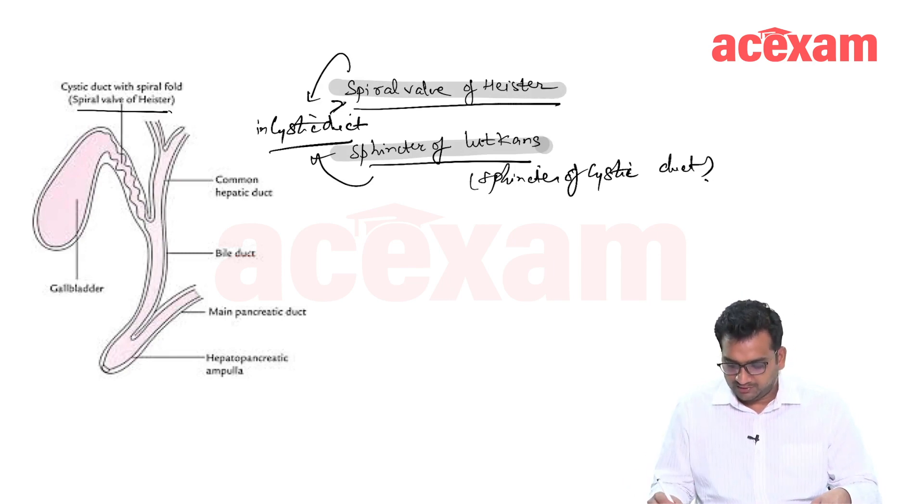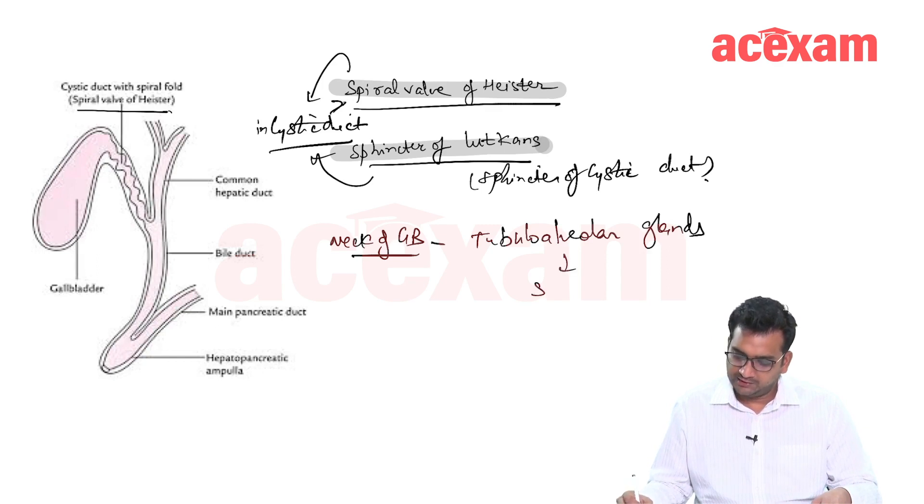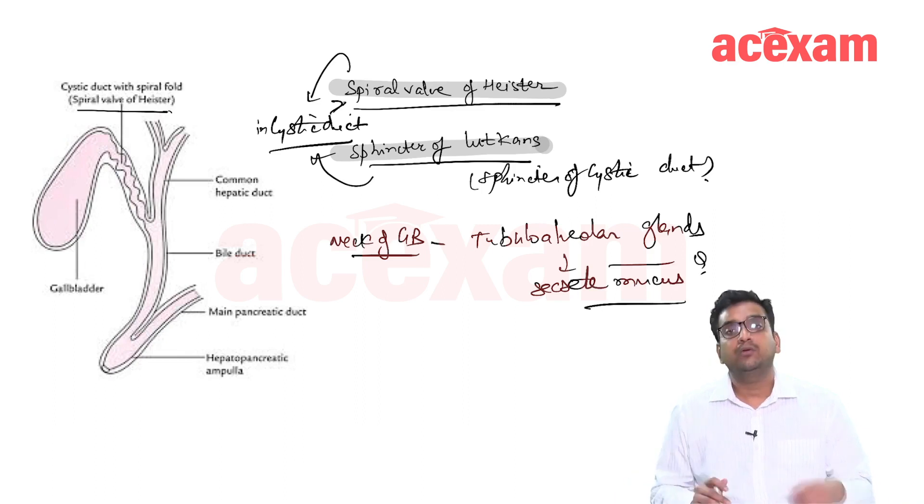In the neck of gallbladder, there are glands in neck of gallbladder. Here, there are tubular alveoli glands which secrete mucus. Overall, gallbladder is having epithelium, you can see columnar epithelium.